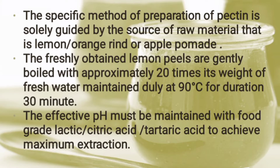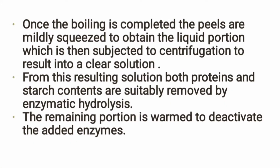This is the structure of pectin. Preparation is important. The raw material used is lemon peels. We boil fresh lemon peels with 20 times the volume of fresh water at 90°C for 30 minutes, adjusting pH with lactic acid, citric acid, or tartaric acid at around 50°C. After boiling to soften the peel, we squeeze out the liquid and centrifuge it to get two portions. The clear solution contains proteins and starch.